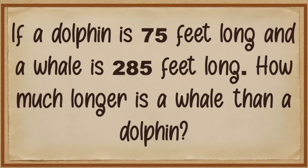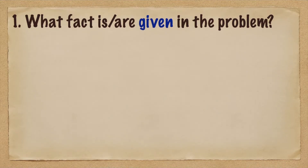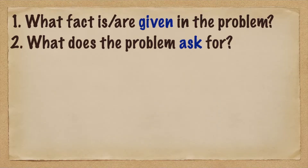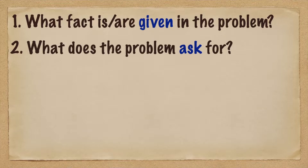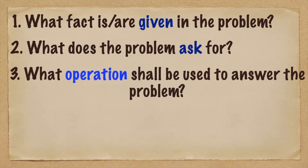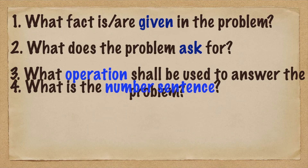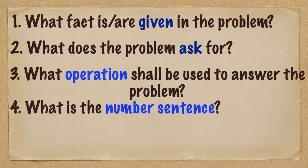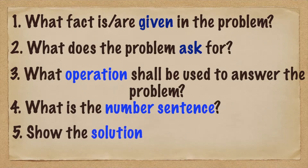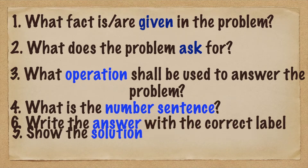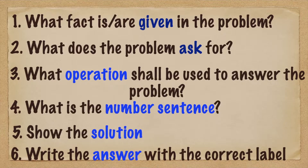In order to solve this, we're going to answer the following questions. First, what facts are given in the problem? Next, what does the problem ask for? Third, what operation shall be used to answer the problem? Fourth, what is the number sentence? Fifth, show the solution. And lastly, write the answer with the correct label. So let's answer the problem using these guide questions.